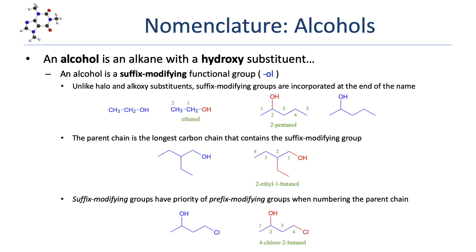The remaining functional groups are treated quite differently than alkyl halides and ethers. The first is alcohols. An alcohol is an alkane that has a hydroxy group. Unlike halogens and alkoxy groups, an alcohol is indicated in a name using a suffix — in this case, -ol. We drop the -e from the alkane name and add -ol. Looking at this simple molecule, the parent chain is a 2-carbon chain. We number starting from the end closer to the functional group, so the rightmost carbon bearing the OH gets number 1. It's an ethane derivative and an alcohol, so we drop the -e and add -ol: ethanol — the booze molecule.